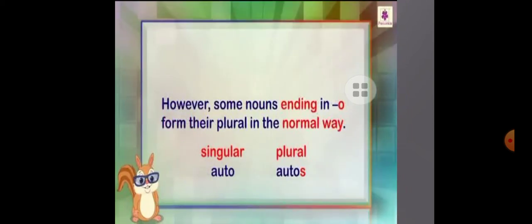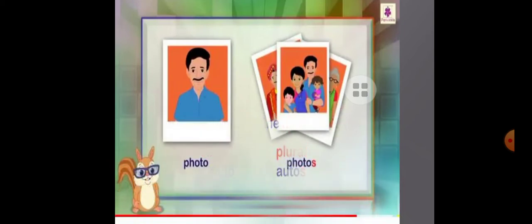Some nouns ending in -o form their plural in the normal way — we add only -s. For example, auto becomes autos, photo becomes photos.